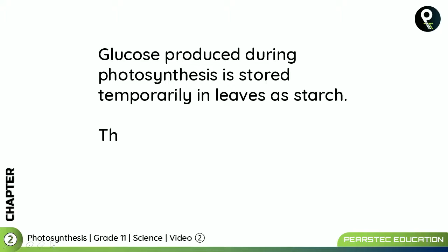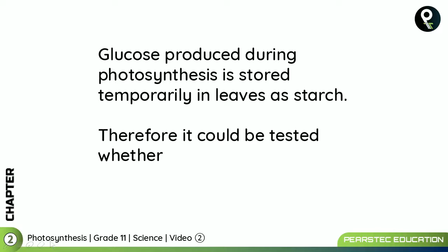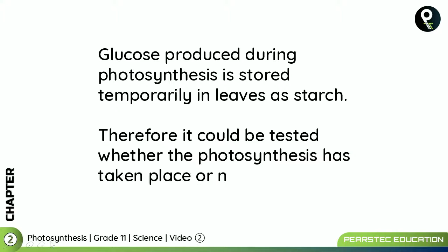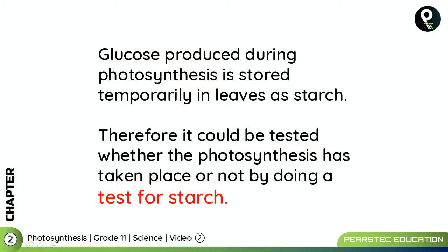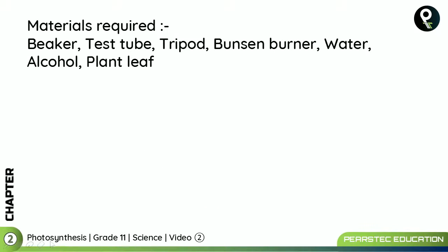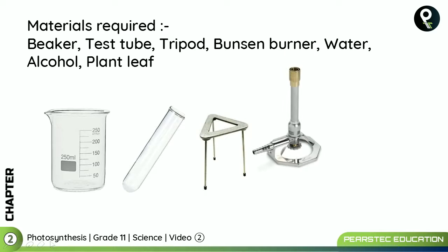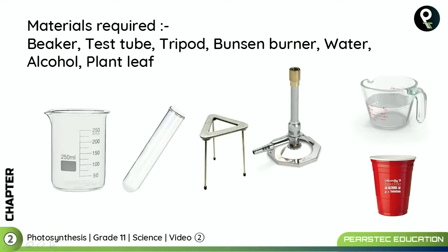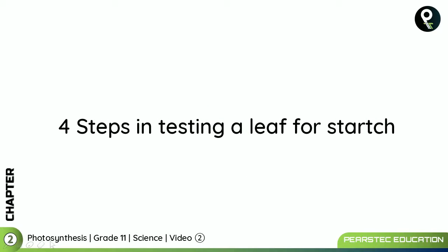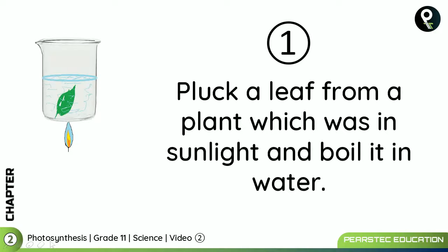Glucose produced during photosynthesis is stored temporarily in leaves as starch. Therefore, it can be tested whether photosynthesis has taken place by doing a test for starch. The materials we need are: a beaker, test tube, tripod, Bunsen burner, water, alcohol, and a plant leaf.